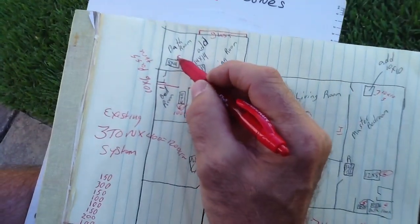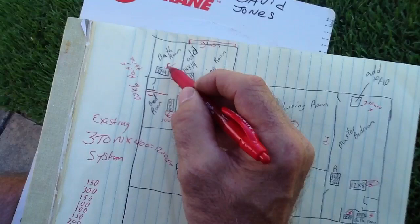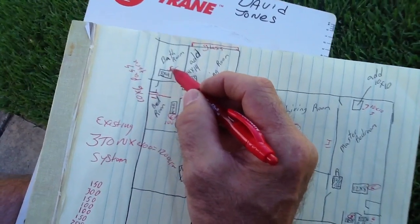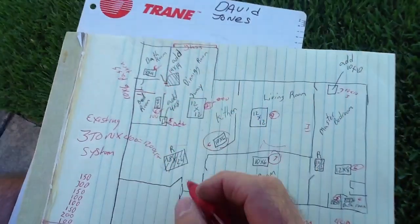This is the bathroom, another five-inch flex. We do not use four-inch for nothing because four-inch is pretty much useless, so that's 50 CFMs.